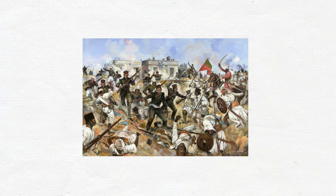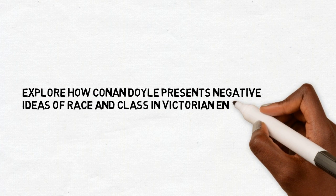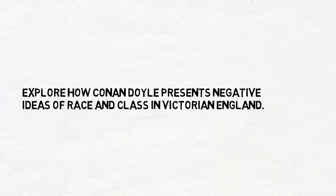So now we've covered the main themes and contextual factors that you need to know for The Sign of Four. Why don't you attempt the following question? Explore how Conan Doyle presents negative ideas of race and class in Victorian England. Remind yourself of the assessment objectives and make a plan before you start. Don't forget to have a range of short quotations to embed within your response. Analyse Doyle's use of language and structure to present race and class and how this links to Victorian society, and how it affects a Victorian reader and a reader today. If you would like an extract and an AQA exam style question, visit my shop to download — I'll put the link below.